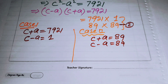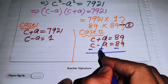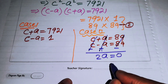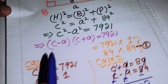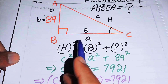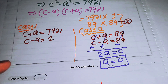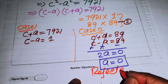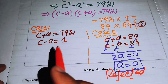In Case 2, subtracting the two equations, the c terms cancel and we get 2a = 0, so a = 0. Since the length of any side of a triangle cannot be zero, Case 2 is rejected.